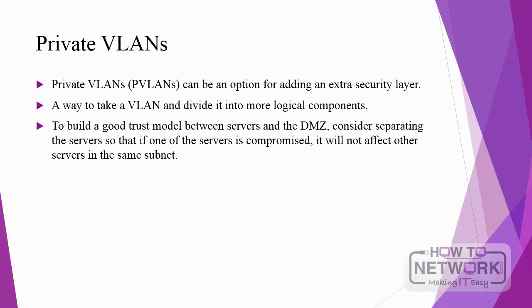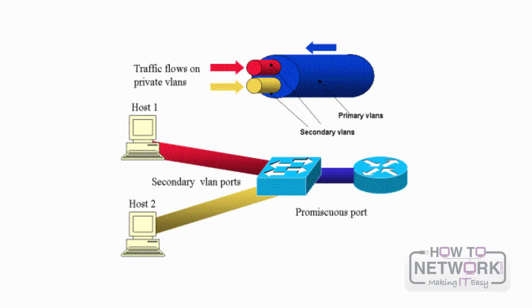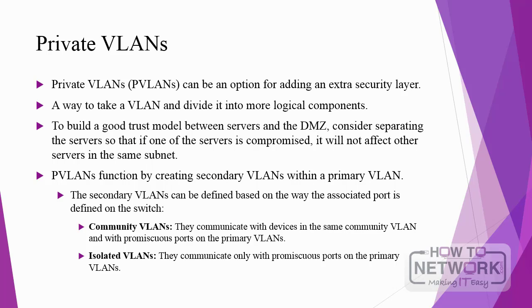To build a good trust model between servers and the DMZ, consider separating the servers so that if one of the servers is compromised, it will not affect the other ones. PVLANs function by creating a secondary VLAN within a primary VLAN. The secondary VLANs can be defined based on the way the associated port is defined on the switch — such as community VLANs, which communicate with devices in the same community and with promiscuous ports on the primary VLAN, and isolated VLANs, which communicate only with promiscuous ports on the primary VLAN.